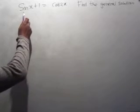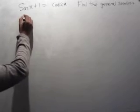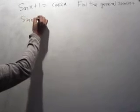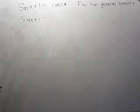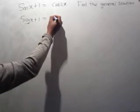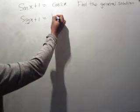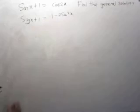We are now finding the general solution for sin x plus 1 is equal to cos 2x. Here we have sin x plus 1 is equal to — this one is a double angle identity, and here we have a sin — which means it's going to be 1 minus 2 sin squared x.